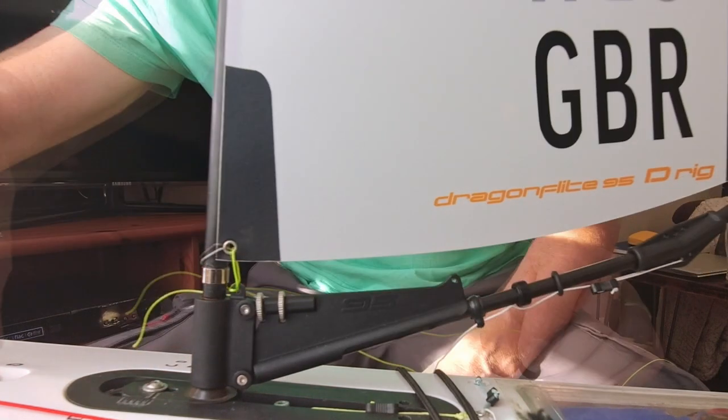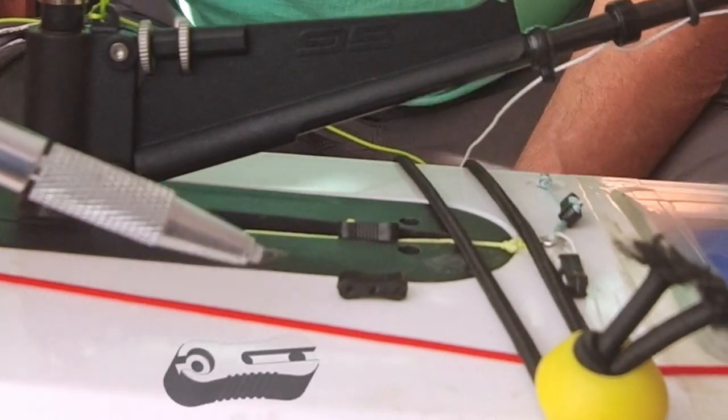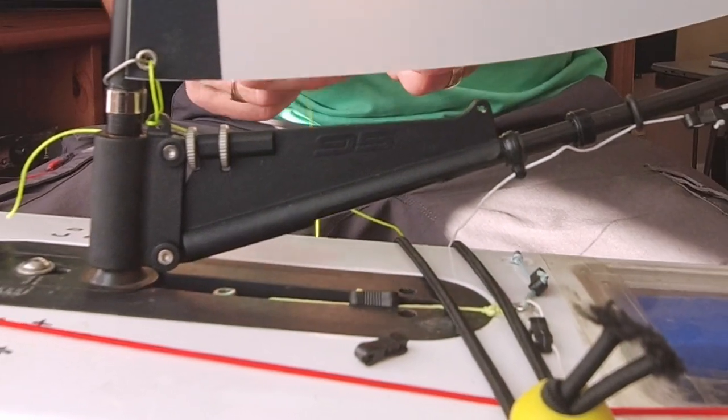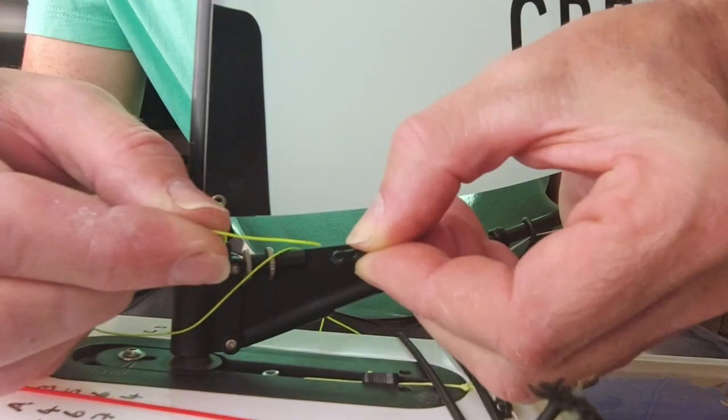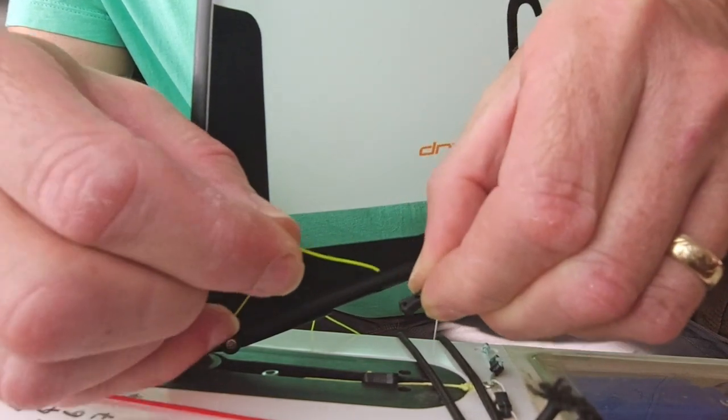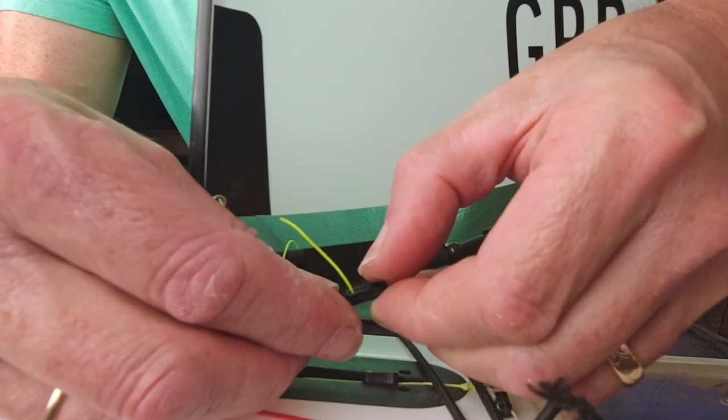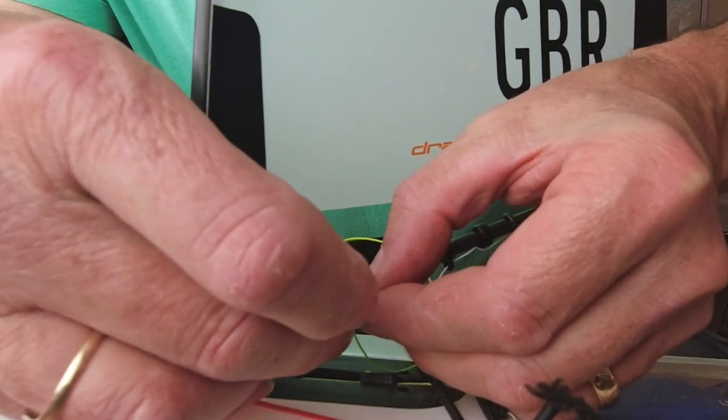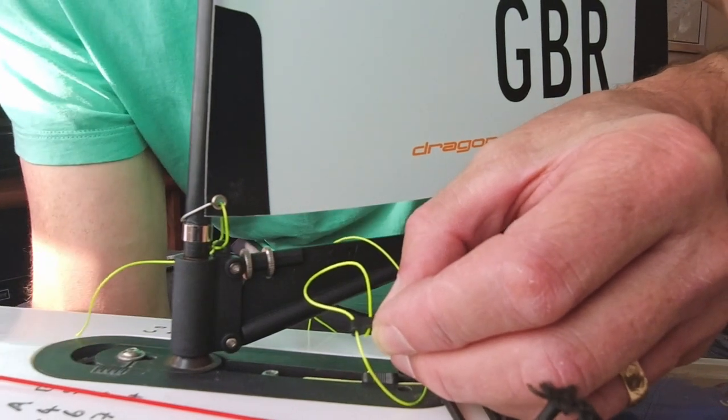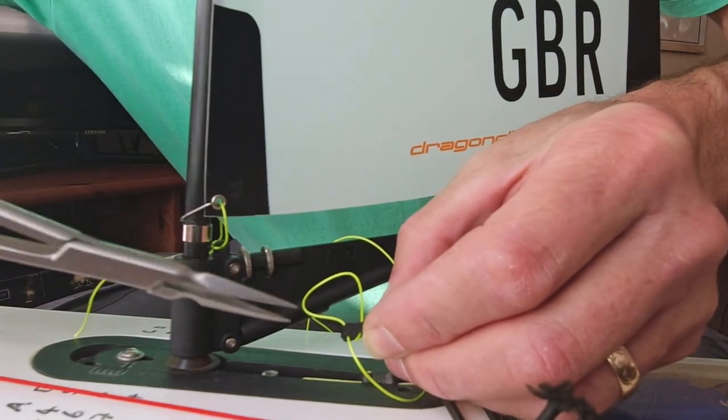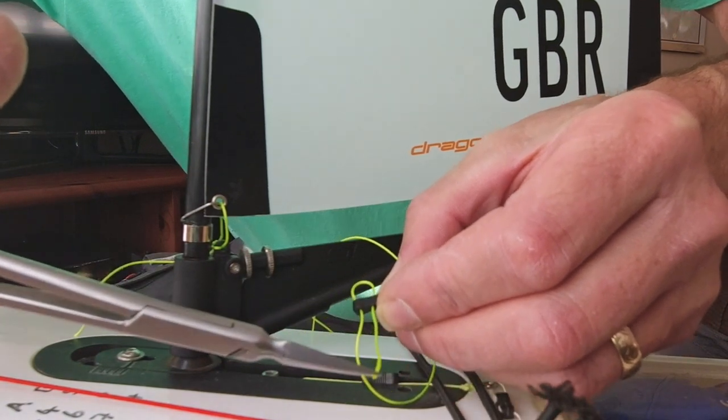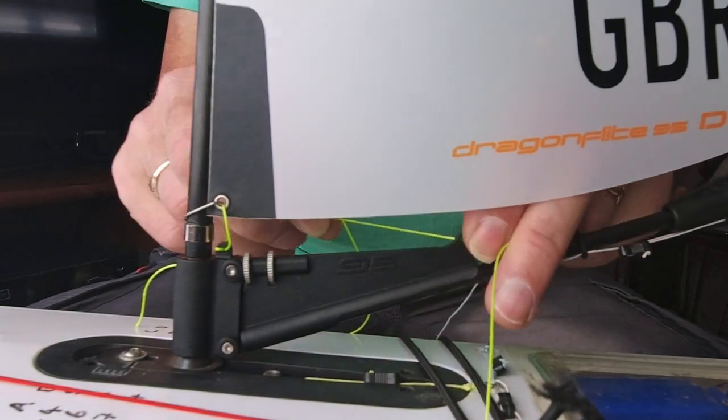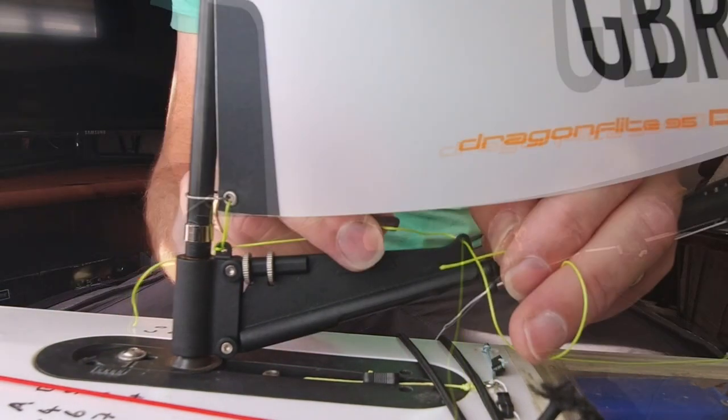Lead it back along the boom and into the first hole of a bousy block. Take the dyneema out the other side and then straight back down the next hole. Then run it along the boom to the eye in the compression strut and then lead it back to the last hole of the bousy.